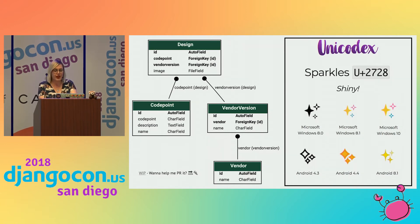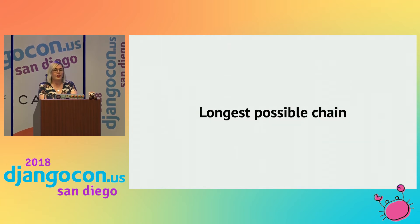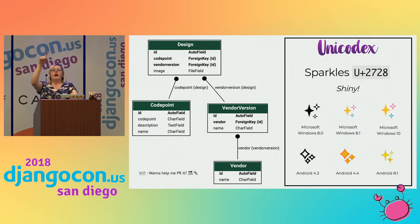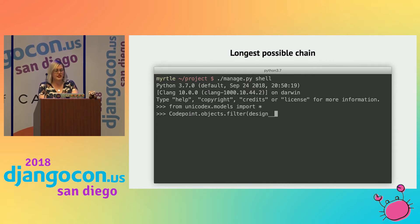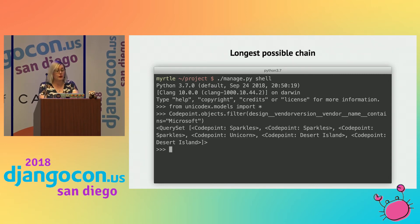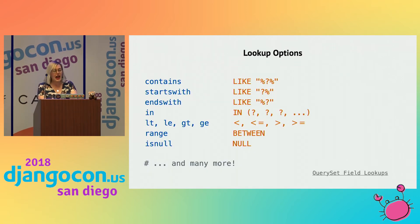Now that we have our model, we can get our longest possible chain — starting from the left and working our way over to the right using all the models. We can import from star because we're lazy, and then start from one side and work across: `CodePoint.objects.filter(design__vendorversion__vendor__name__contains='Microsoft')`. We get all the code points that map to a design, that map to a vendor version, that maps to a vendor called Microsoft. There's a whole bunch of different lookup options: like, greater than, less than, range, is_null, and more.